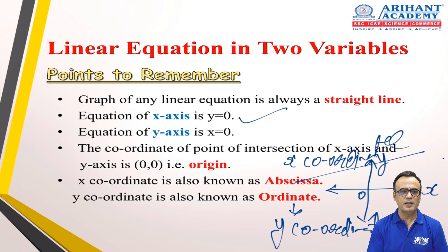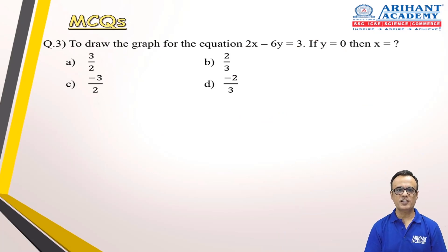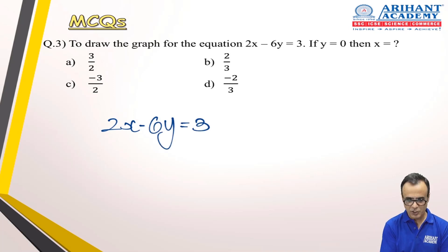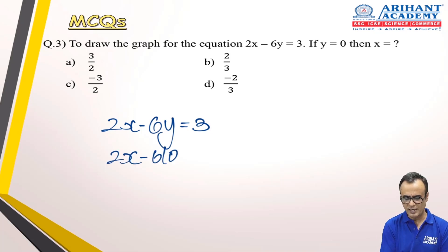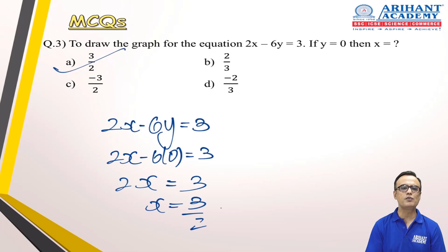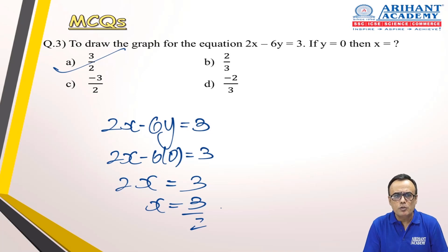Let's see the MCQs based on this topic. To draw the graph of equation 2x − 6y = 3, if y = 0 then x equals what? This is very simple — substitute y = 0 into 2x − 6y = 3. So 2x − 6(0) = 3, which gives 2x = 3, so x = 3/2. Tick option A and move to the next one. These types of questions are straightforward — don't worry, nothing out of the blue will come in the exam.